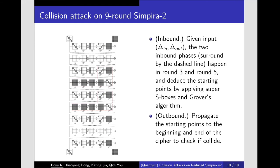In the paper, we present the collision attack on Simpira-2 and Simpira-4. Firstly, we introduce the collision attack on nine rounds Simpira-2 as shown in figure. In the inbound phase, the two inbound parts that happen in round 3 and round 5 are surrounded by the red dashed line and deduce the starting points by applying super S-box and Grover algorithm. In the outbound phase, propagate the starting points to the beginning and the end of the cipher to check if correct.